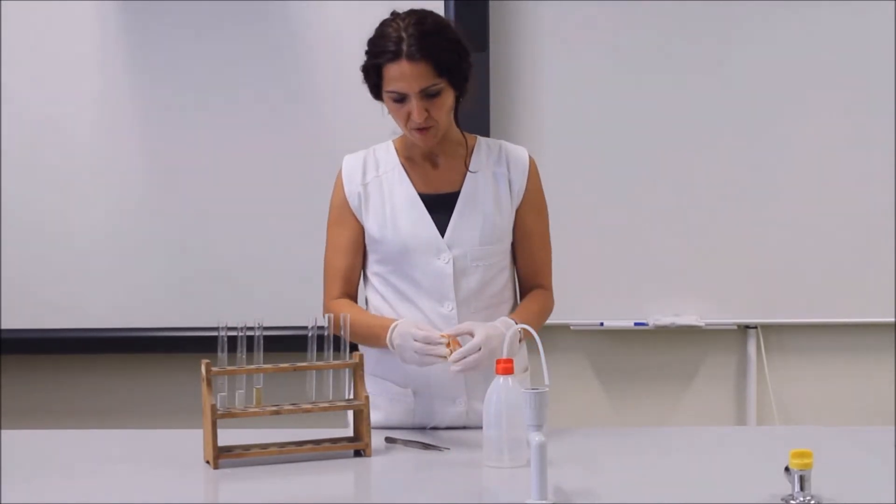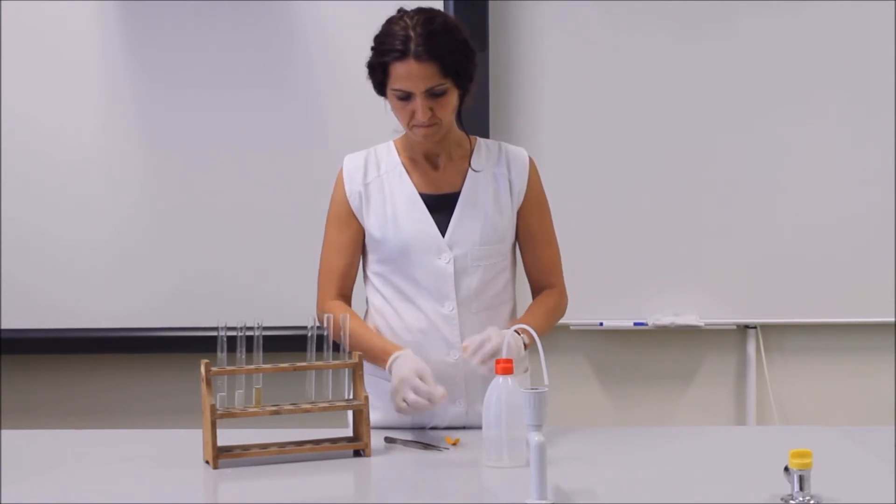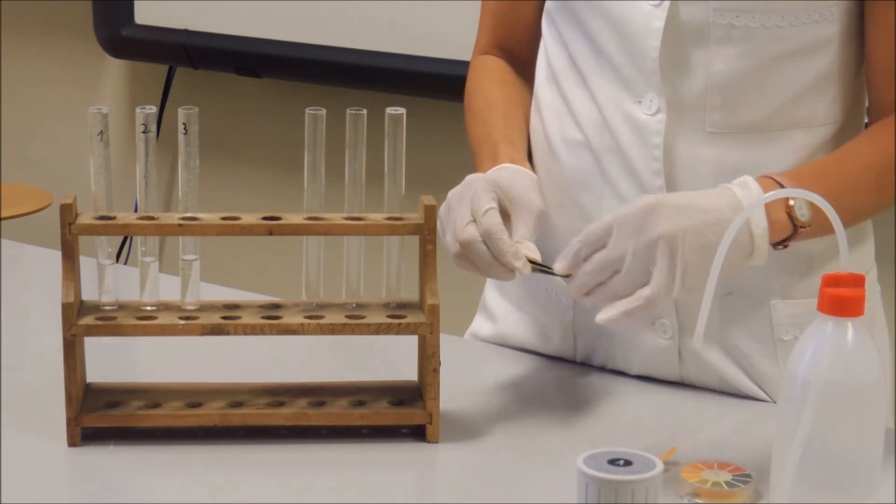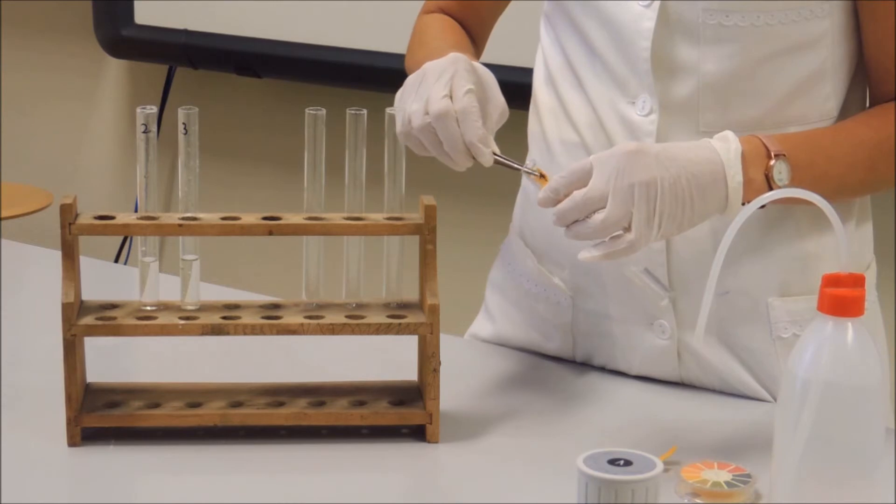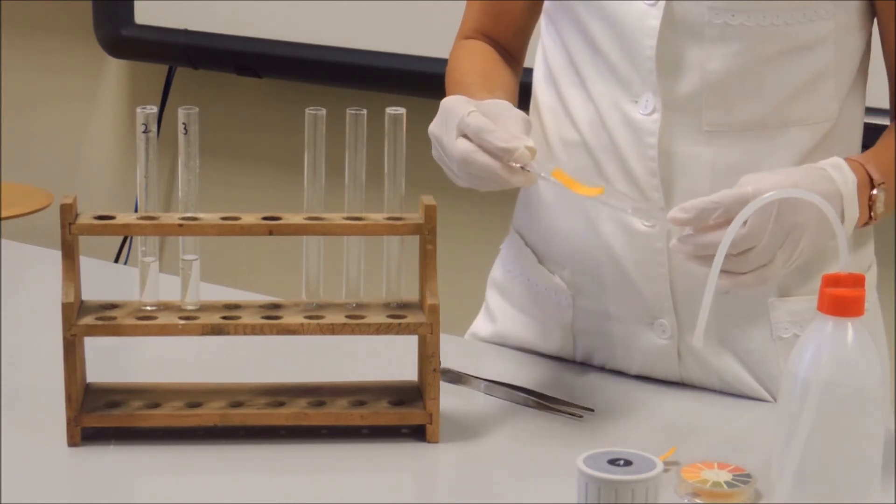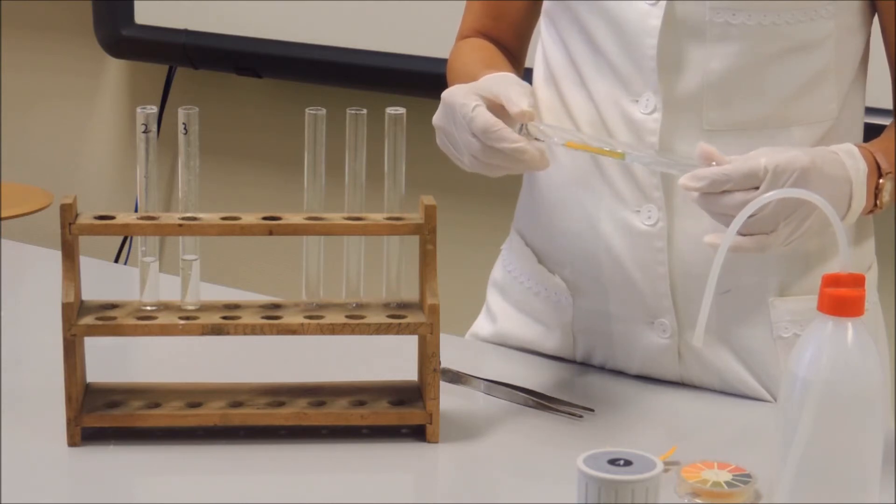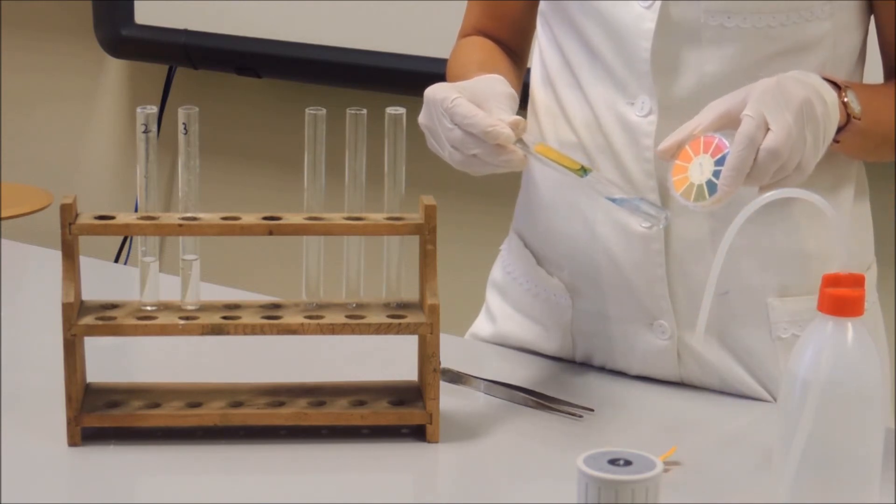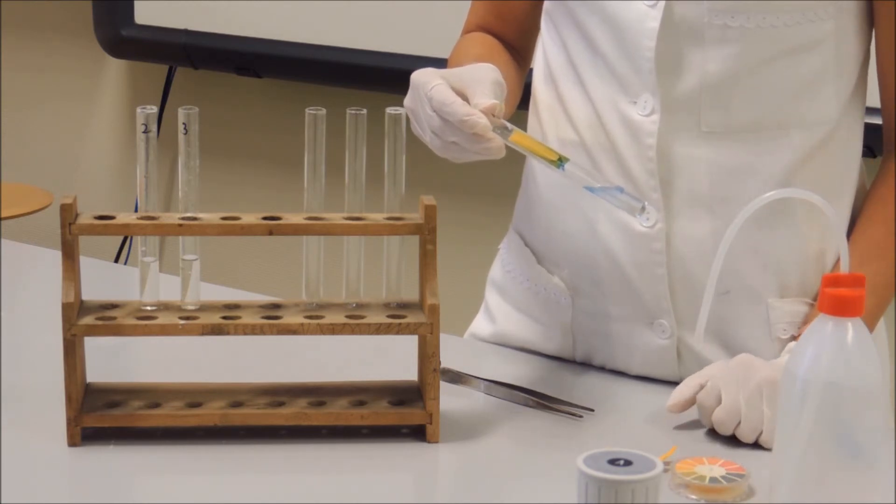We will test their pH with pH paper. Place pH paper in the first test tube. The solution's pH is basic, therefore the first test tube contains sodium acetate.